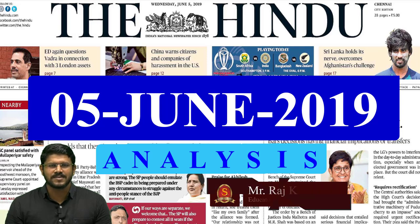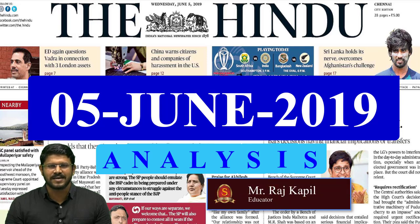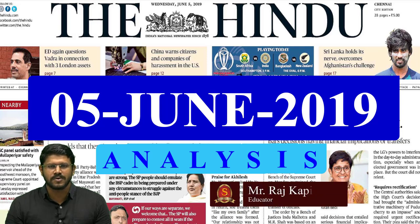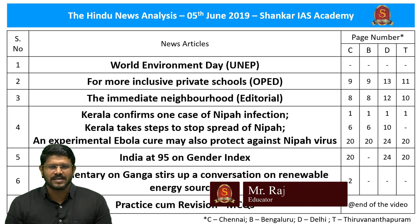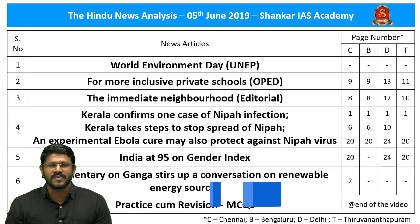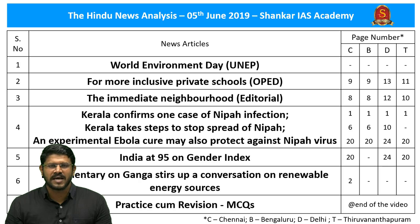Welcome to the Hindu News Analysis by Shankar Ayes Academy for the date 5th June 2019. Displayed are the list of news articles selected for today's analysis and the page numbers in Chennai, Delhi, Bengaluru and Thiruvananthapuram editions of the newspaper. The link for the handwritten notes and the timestamping of the news articles are provided in the description box, and the timestamping is also provided in the comment section for the benefit of mobile phone viewers.